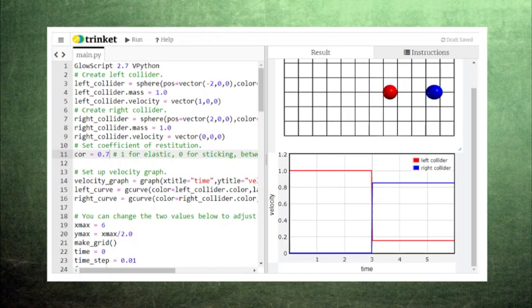The lost kinetic energy usually crumples the colliders or escapes as sound or heat. Although our code does not depict where the kinetic energy goes, you can imagine these energy transfers from real life examples.